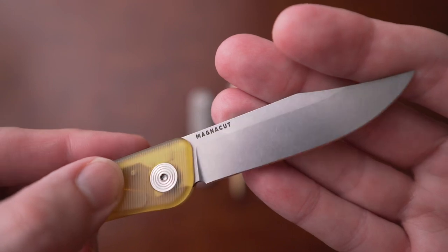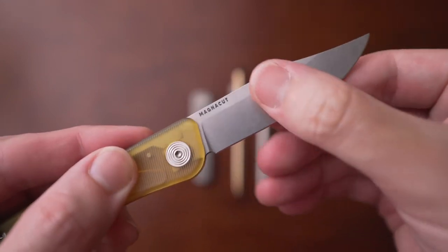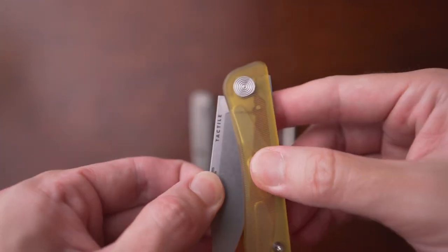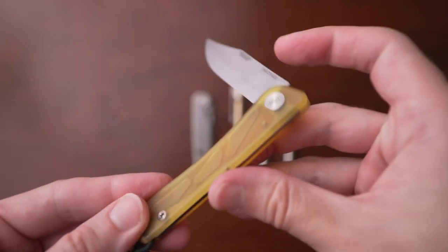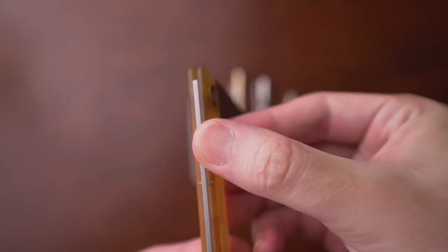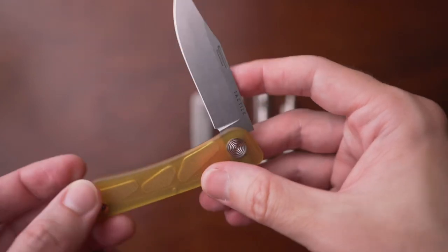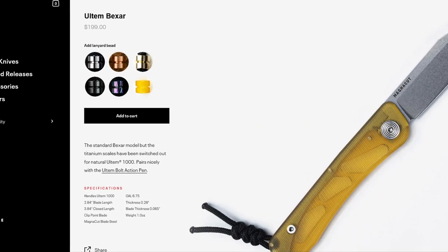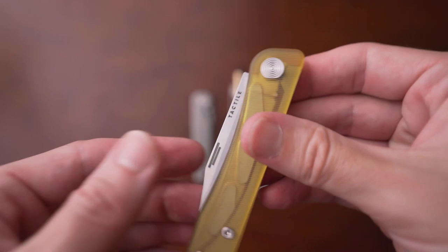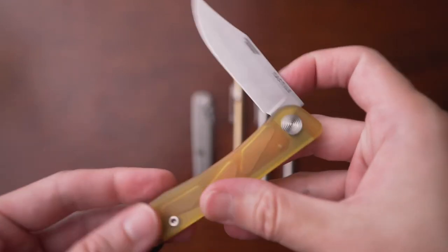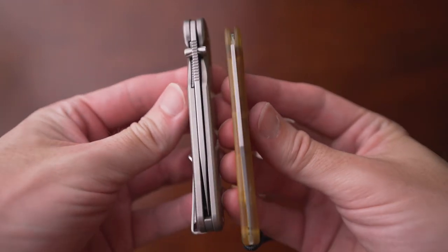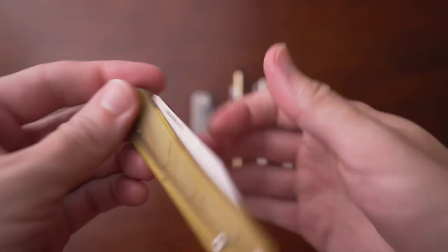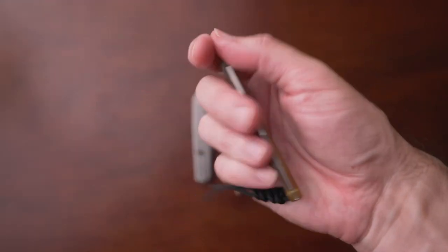The blade is a clip point style blade with a flat grind there. Again, the blade steel on this is MagnaCut again. Has two little parallel nail nicks, which I love. I think that's so cool. This one has a half stop that's pretty flush. And the half stop is kind of a safety mechanism. So if you were to accidentally bump the knife, it wouldn't close on your fingers. It would hit that half stop and stop. Now the dimensions of this Ultem Baer are the exact same as the regular titanium Baer, which is a closed length of 3.84 inches, a blade length of 2.84 inches, a blade thickness of 0.065 inches, and overall thickness of 0.28 inches. But the weight of this Ultem Baer is just one ounce.